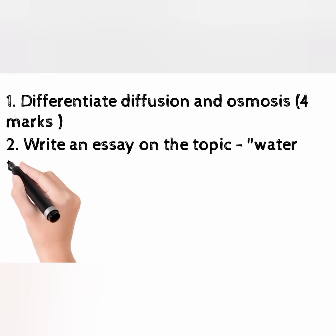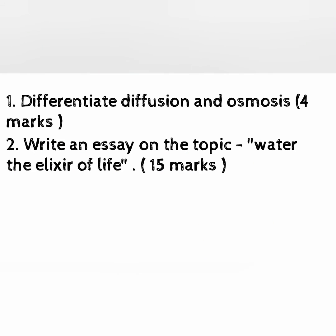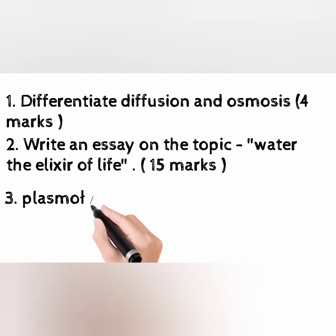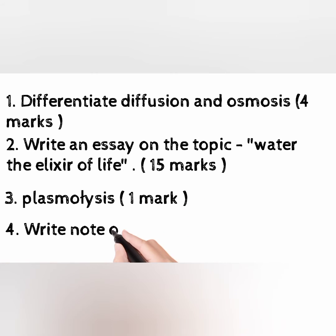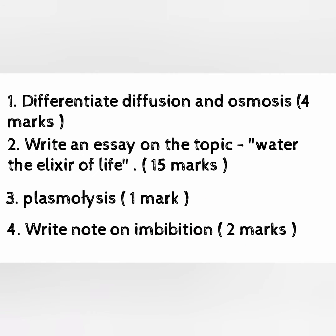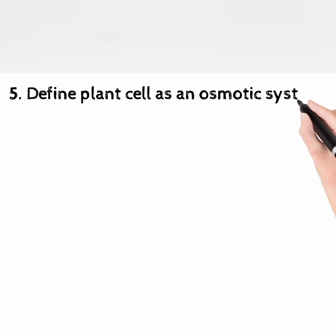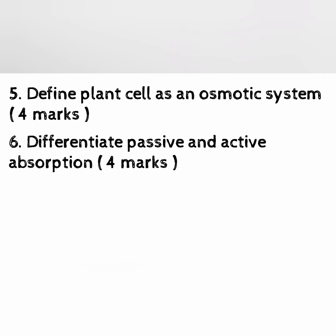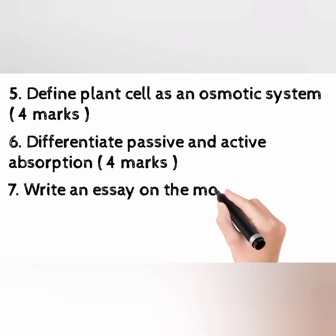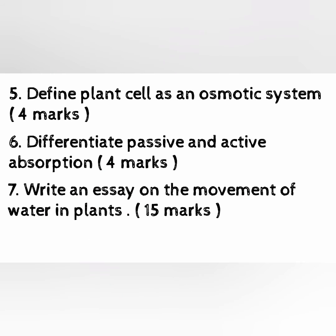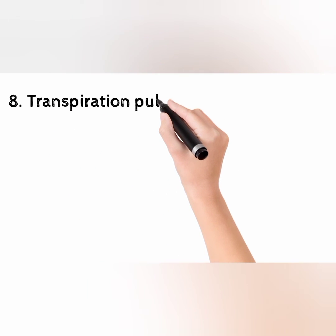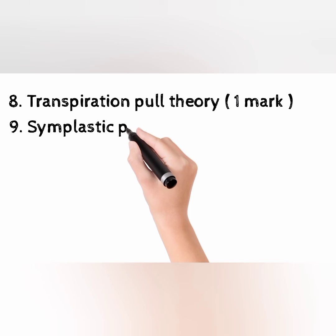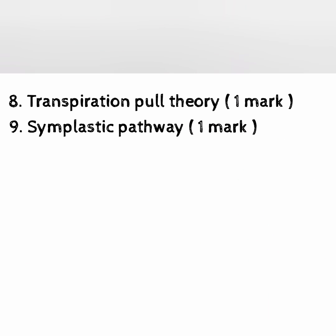Question 3: Plasmolysis — 1 mark. Question 4: Write a note on imbibition — 2 marks. Question 5: Define plant cell as an osmotic system — 4 marks. Question 6: Differentiate passive and active absorption — 4 marks. Question 7: Write an essay on the movement of water in plants — 15 marks. Question 8: Transpiration pull theory — 1 mark.